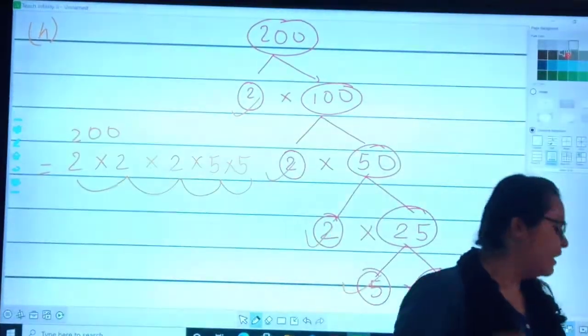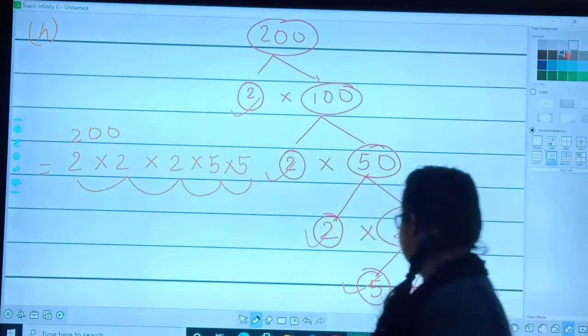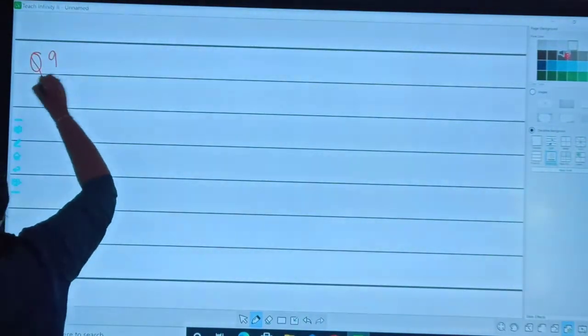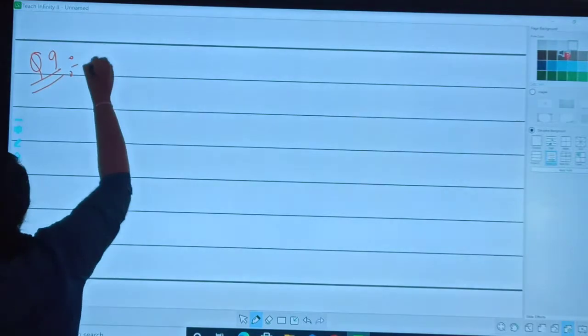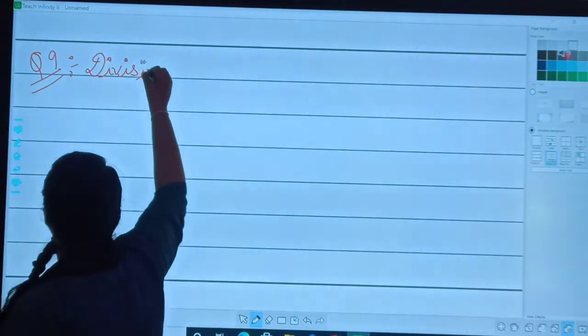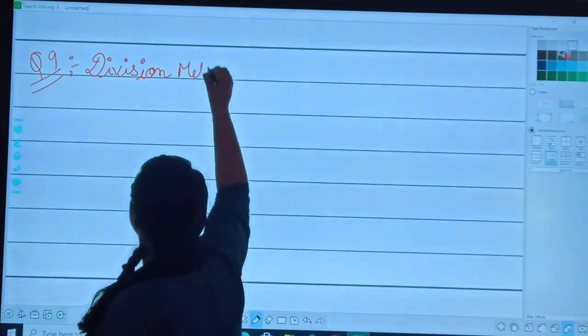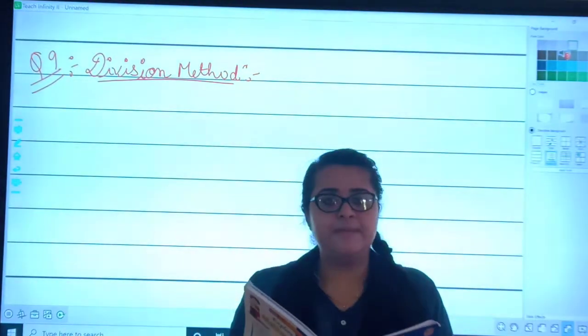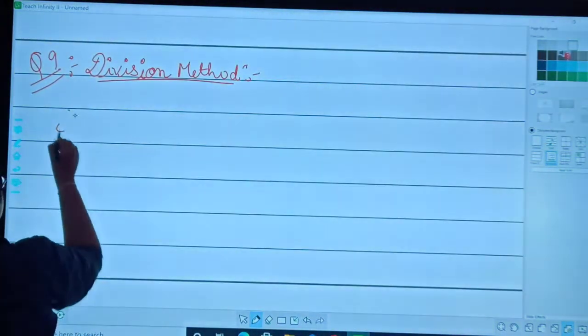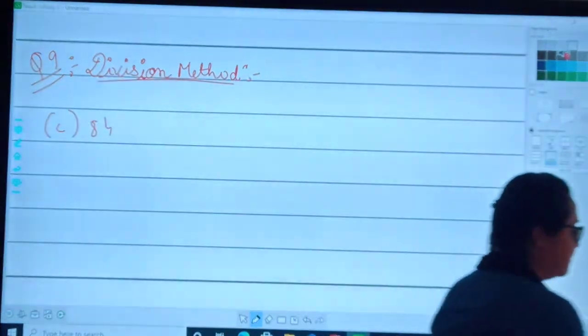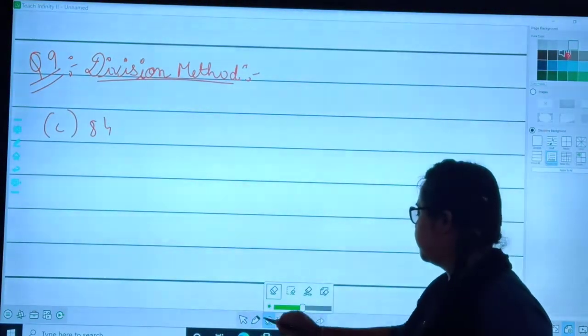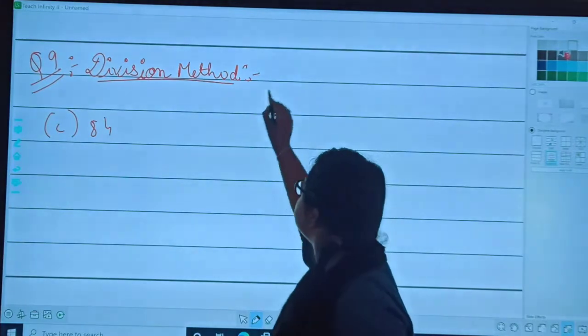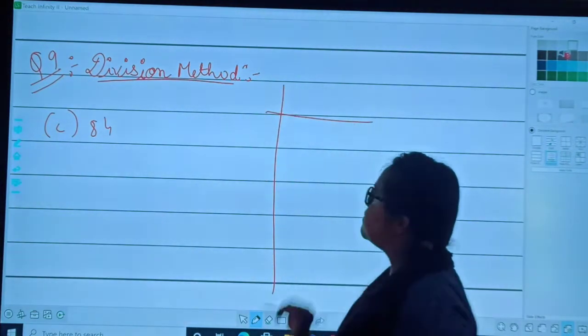Let's solve one more sum in division form, question number 9. Question number 9, we are supposed to use the short division method. Which sum should I start with? C, 84. My question is 84.